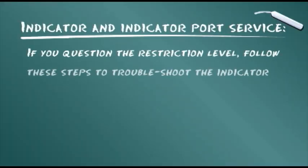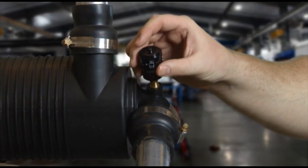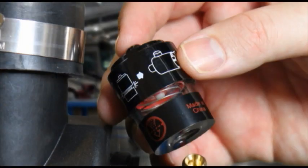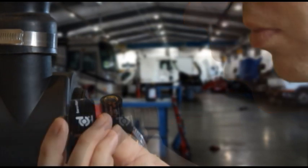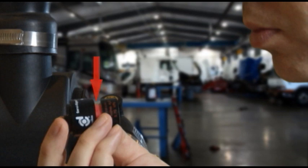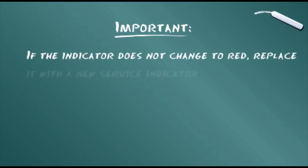If you question the restriction level, here are some steps to follow to troubleshoot the indicator and indicator port. Remove the service indicator for testing. Test by pressing the reset button to clear, then create a small amount of vacuum to the inlet of the service indicator. The service indicator should change to red, indicating it is working properly. If the indicator does not change, replace it with a new service indicator.